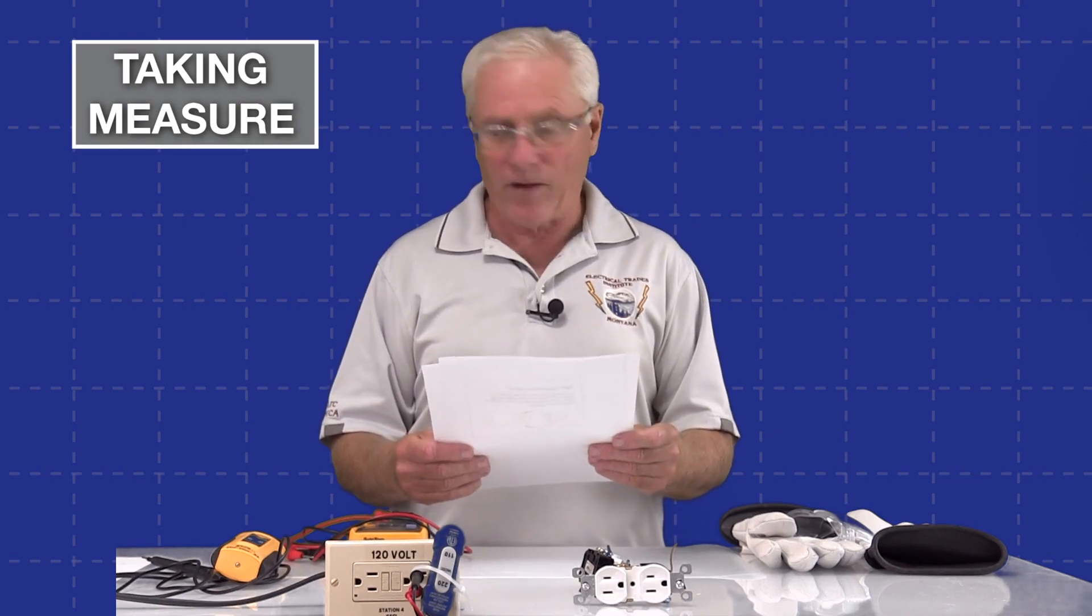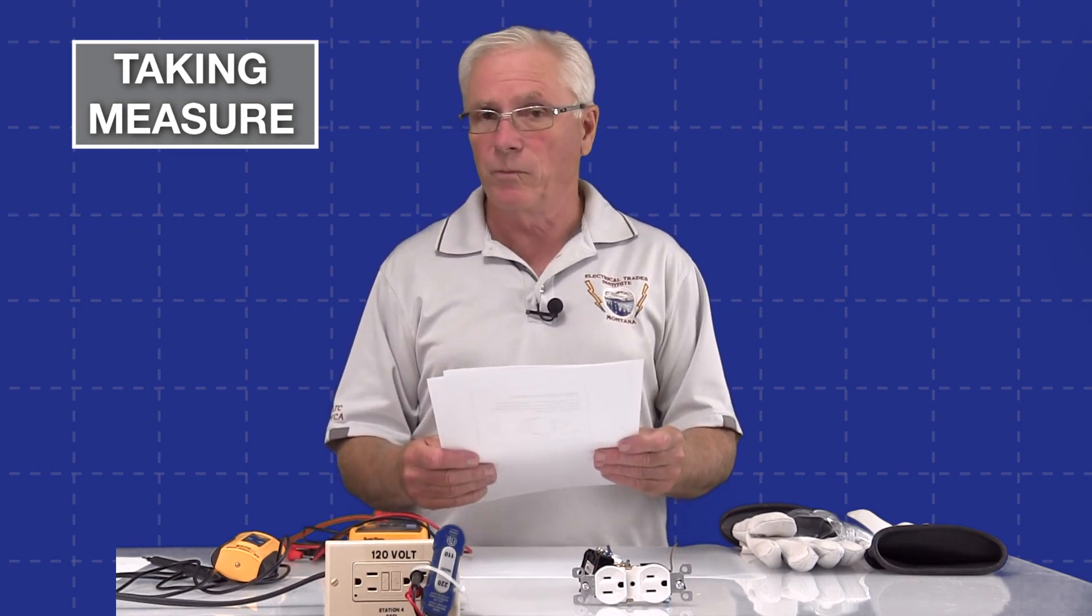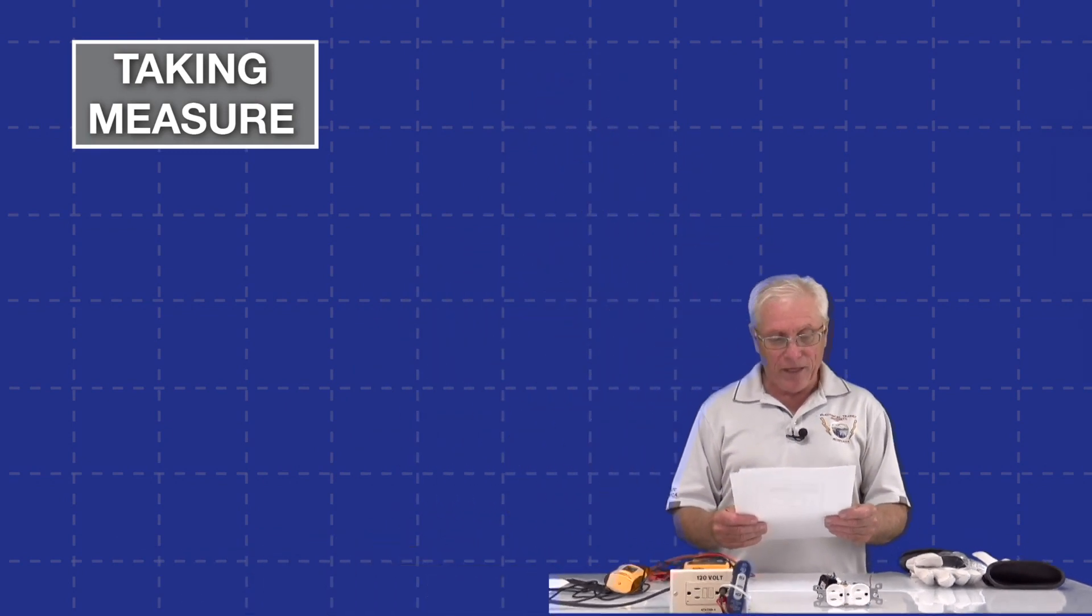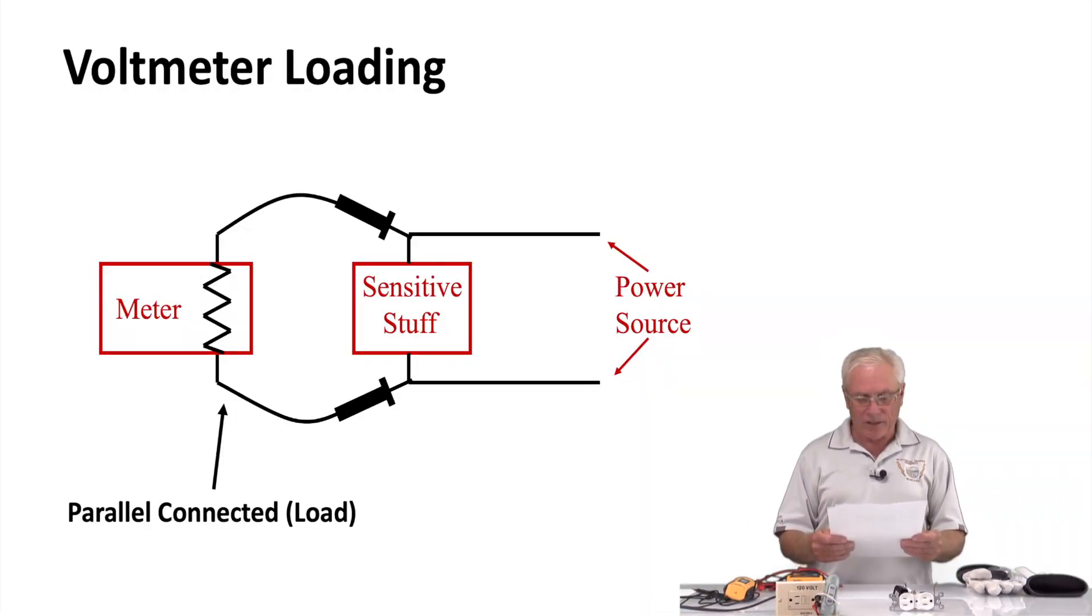We're going to be taking a look at five slides. The first one should pop up on the screen behind me, and you'll see I've got a voltmeter connected to a circuit. I've got a power source on the right hand side connected to sensitive stuff, some sort of sensitive electronics, and then our meter is connected to that so we can take a voltage measurement. What I want you to notice is we are actually connecting in parallel with that circuit when we apply the voltmeter to the circuit, and in doing so, we may alter the circuit.